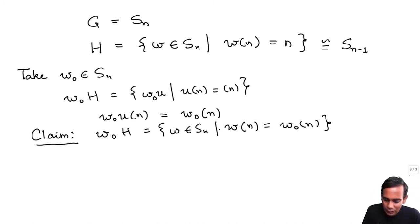So I claim that W0 H is the set of all W in SN such that W of N is equal to W0 of N. And we have already seen one way that each element of W0 H has this property. And to see the converse, we just need to say that suppose W of N is equal to W0 of N.